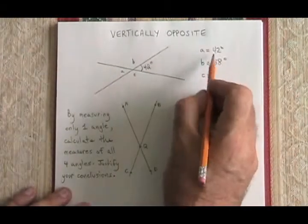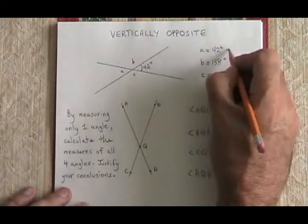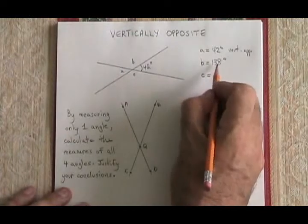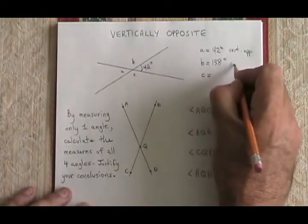We proved that angle A was 42 degrees using the vertically opposite rule. Then we proved that angle B was 138 degrees using the supplementary rule.